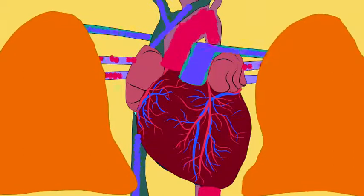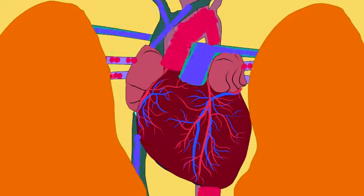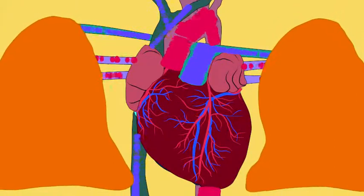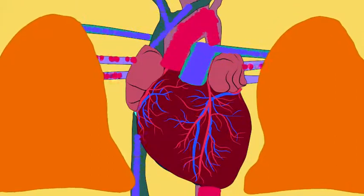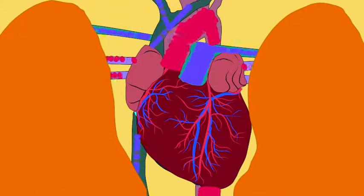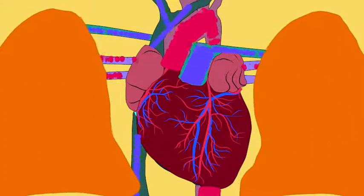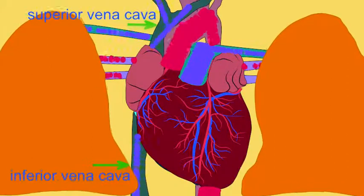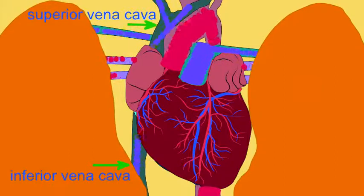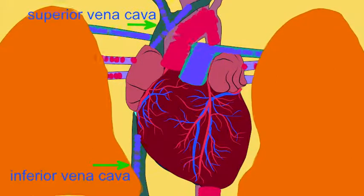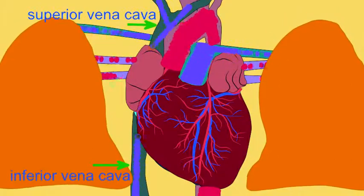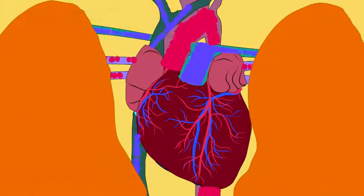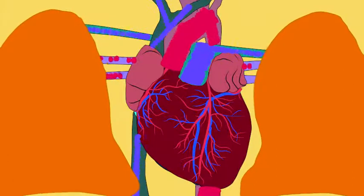A purplish blue, or deoxygenated blood, is what accumulates in tissues after the cells have used the oxygen. This deoxygenated blood is what returns to the heart from veins, traveling through the superior vena cava, draining the upper portion of the body, the inferior vena cava, draining the lower portion of the body, and then the coronary sinus, draining the heart. This blue blood arrives in the right half of the heart.